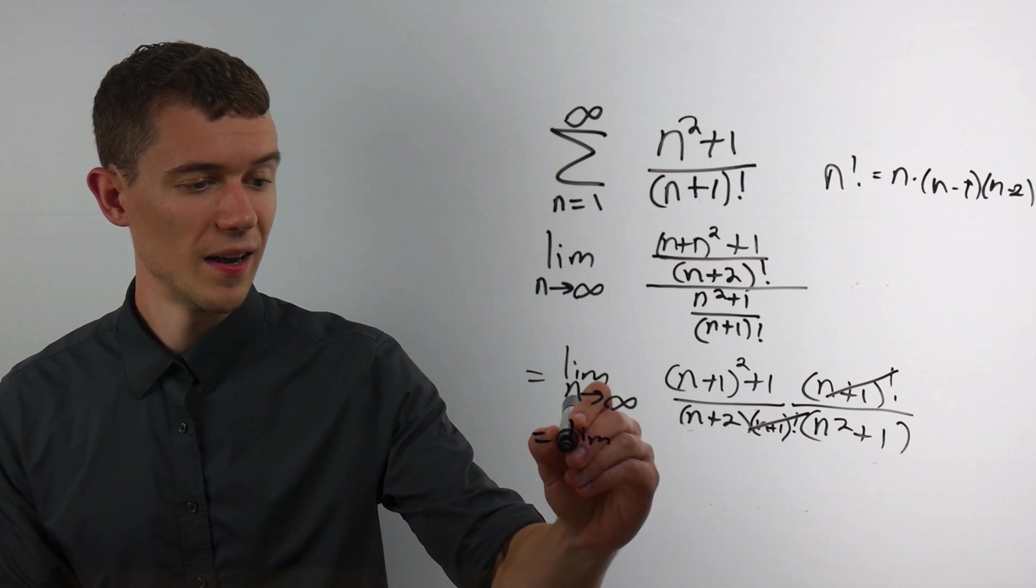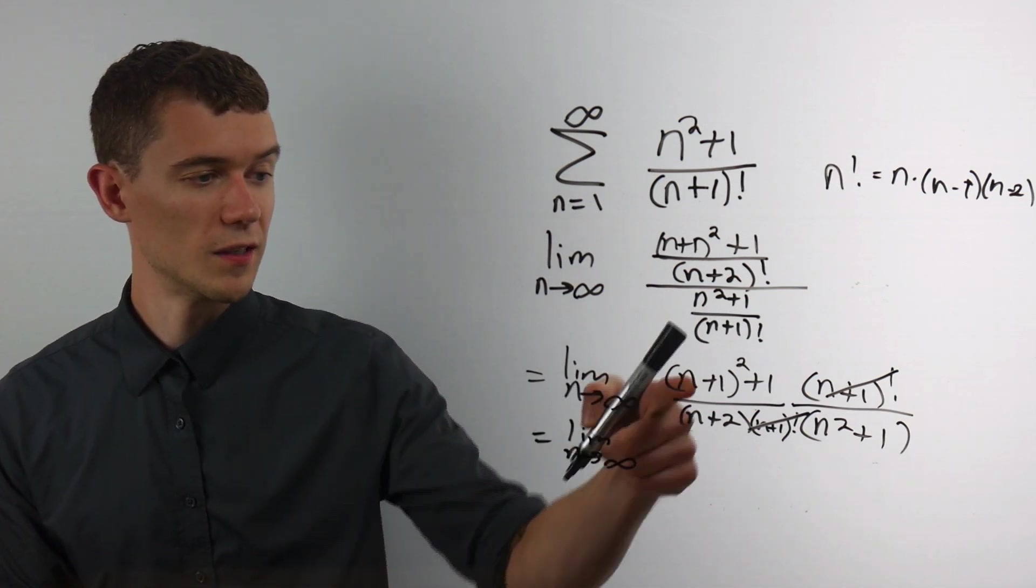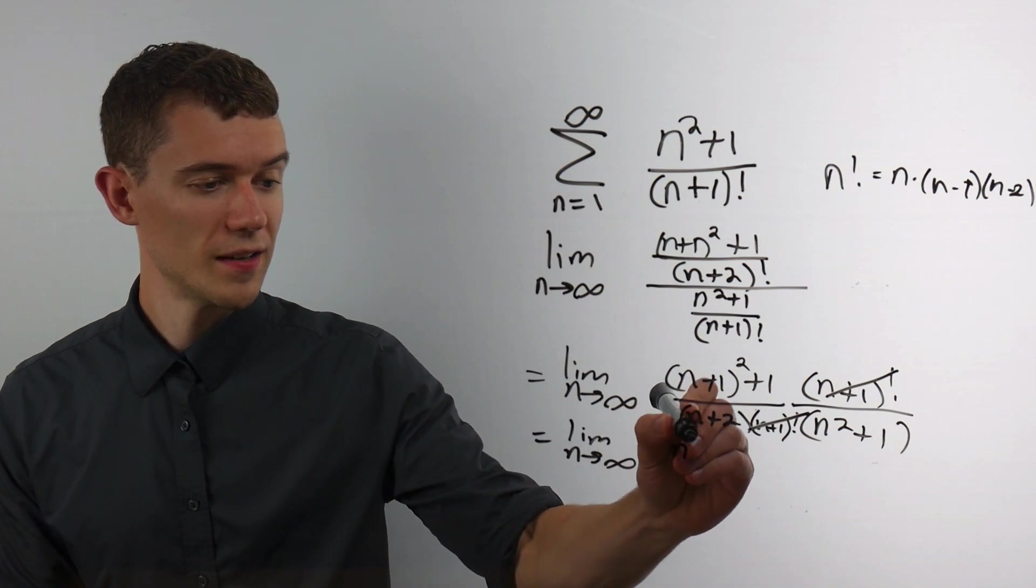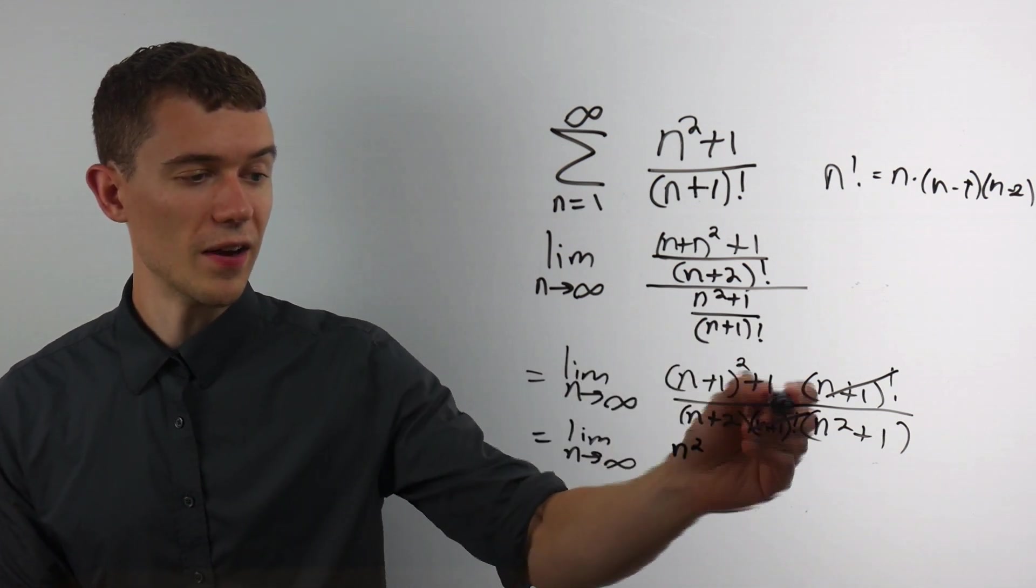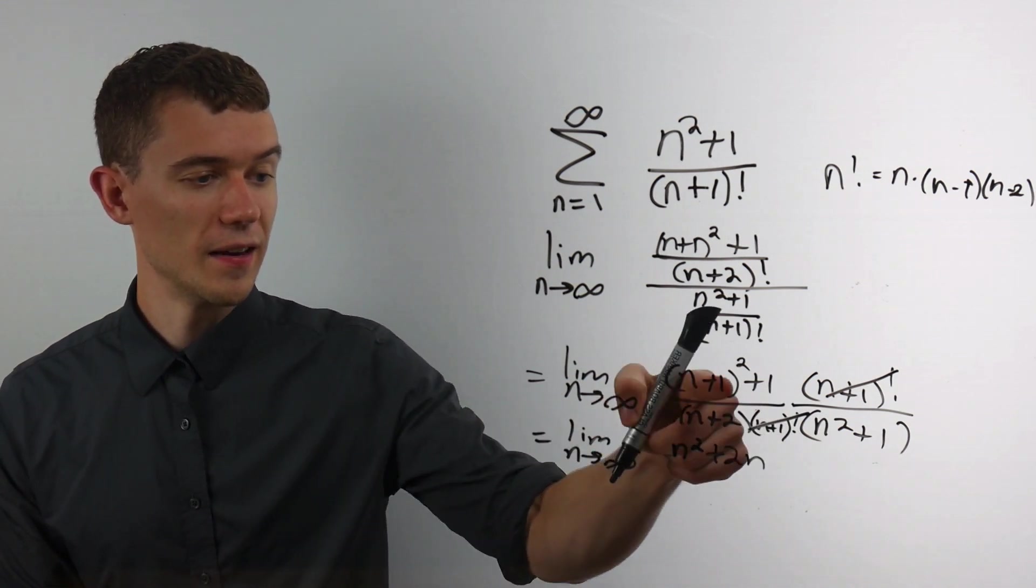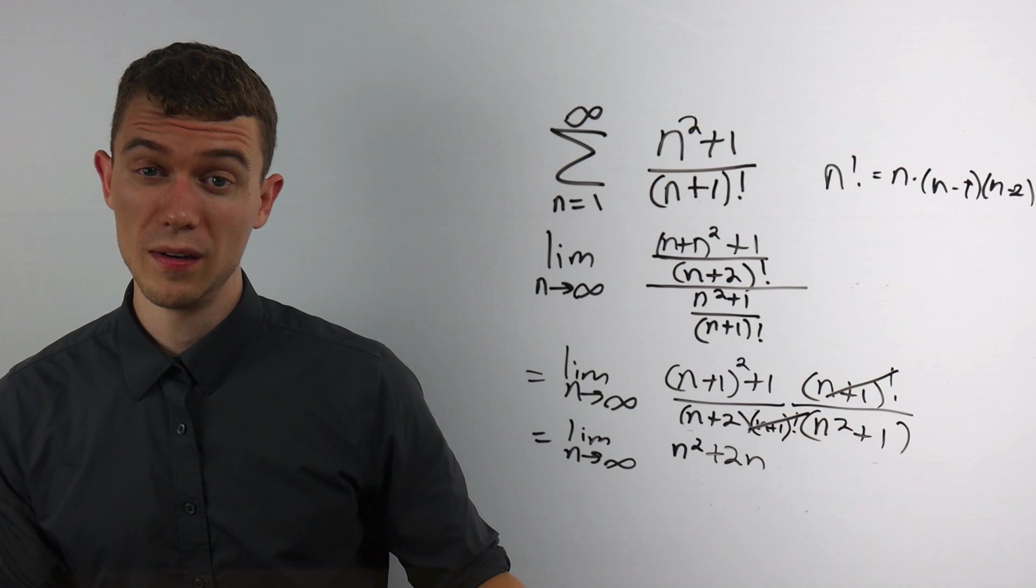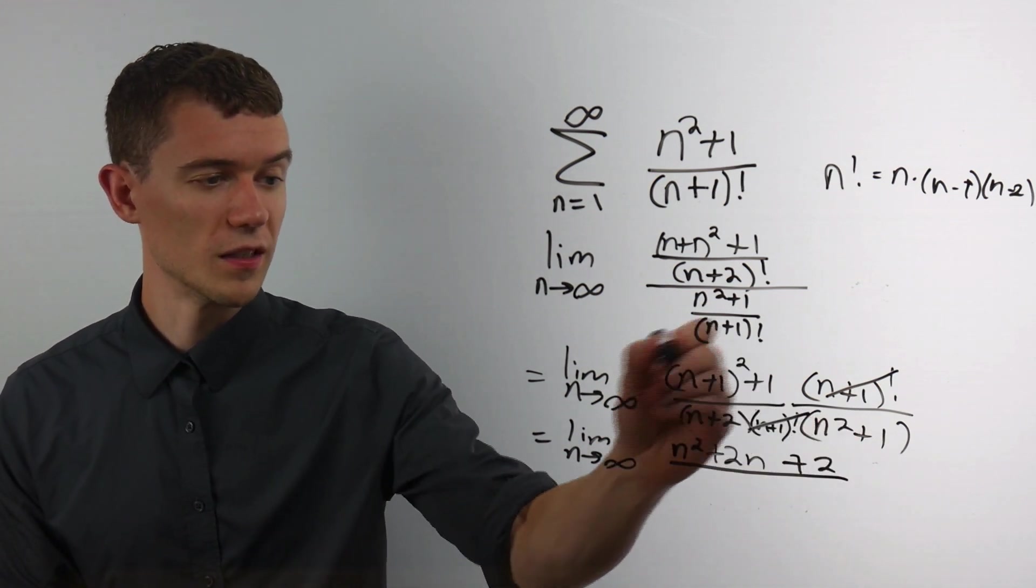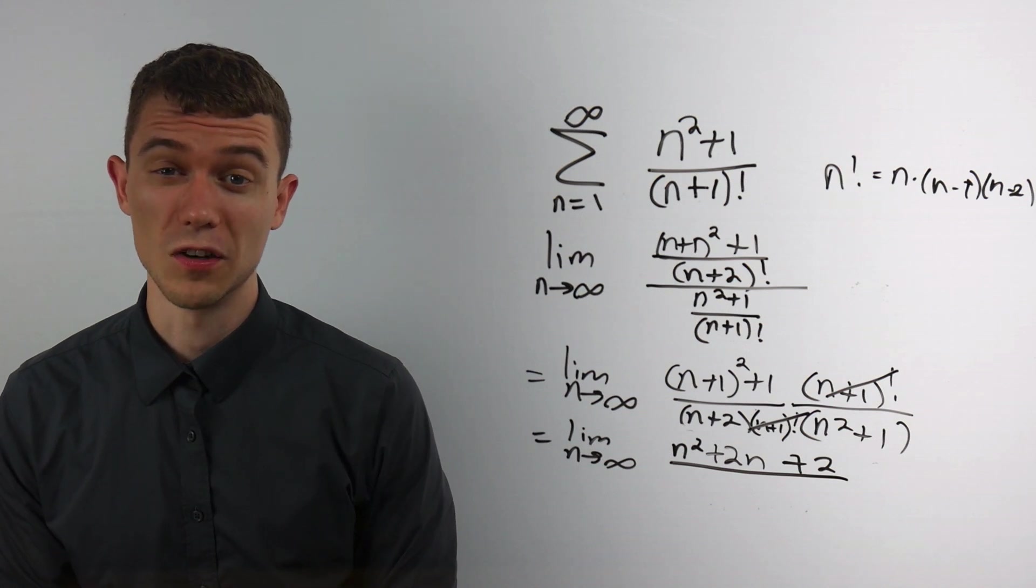Now that we have that, I can rewrite this limit, and maybe I'll take a second to expand this. n plus 1 squared, well, that would be n times n is n squared. I'd have n times 1, 1 times n would give us 2 n's. And then I'd also have plus 1 times 1 is 1, plus an additional 1 would be 2. All I did was expand this term and combine like terms.